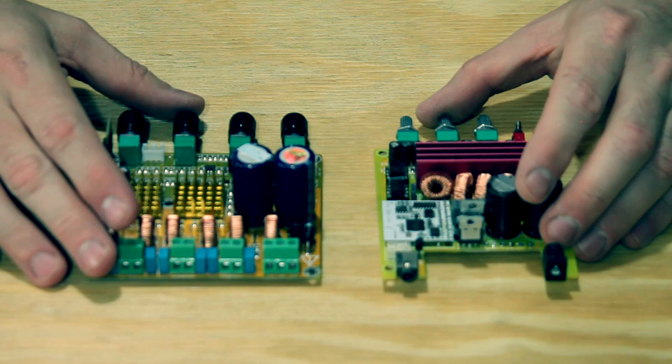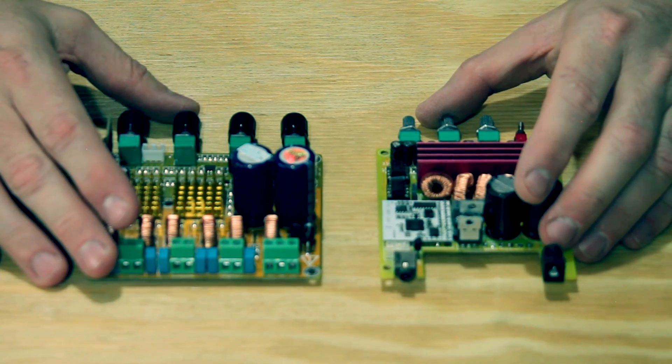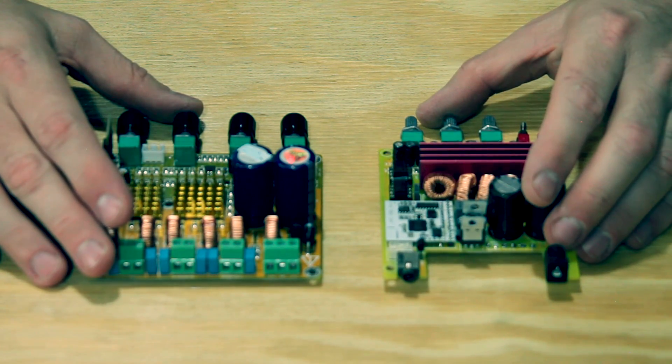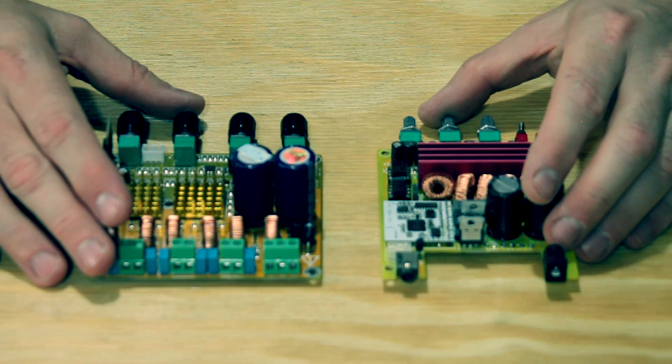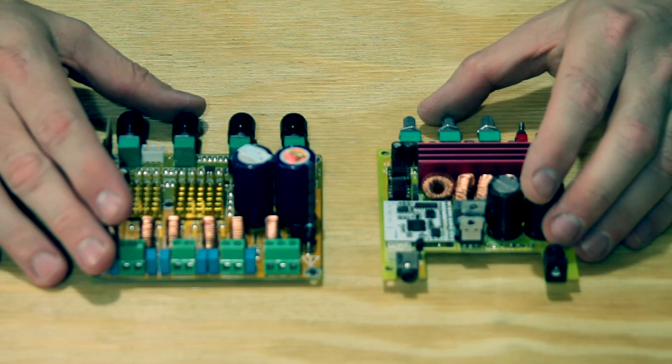They are both TPA3116 amplifier models and they both put out two times 50 watts in two channels and 100 watts in one channel, and I believe that is at about four ohms for each channel.